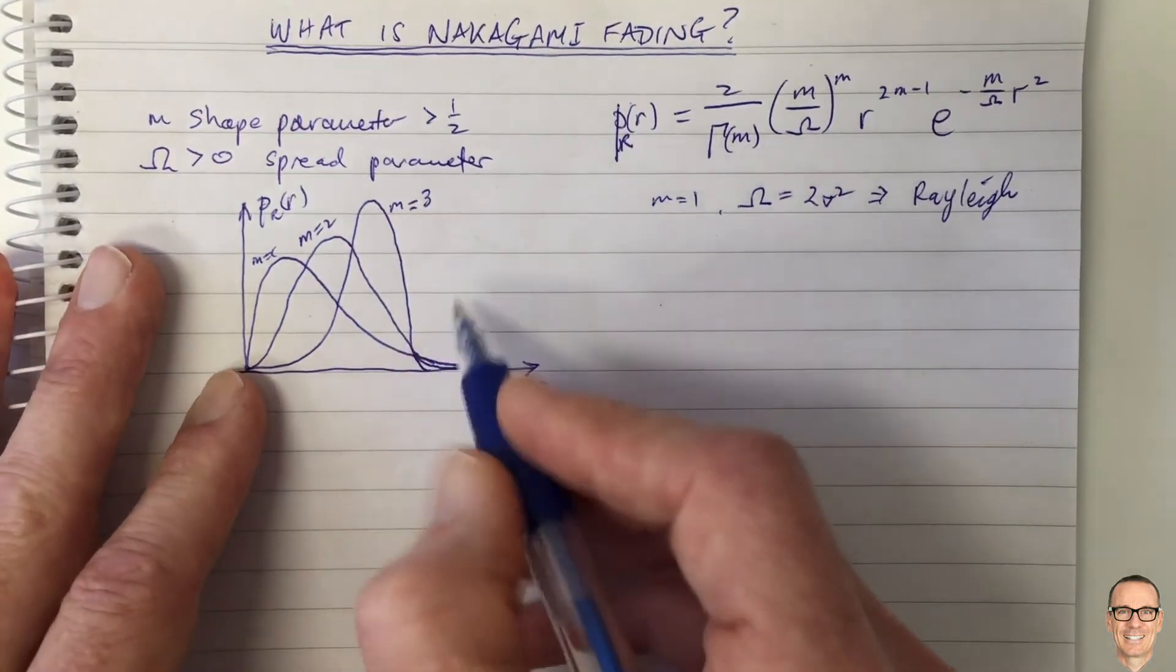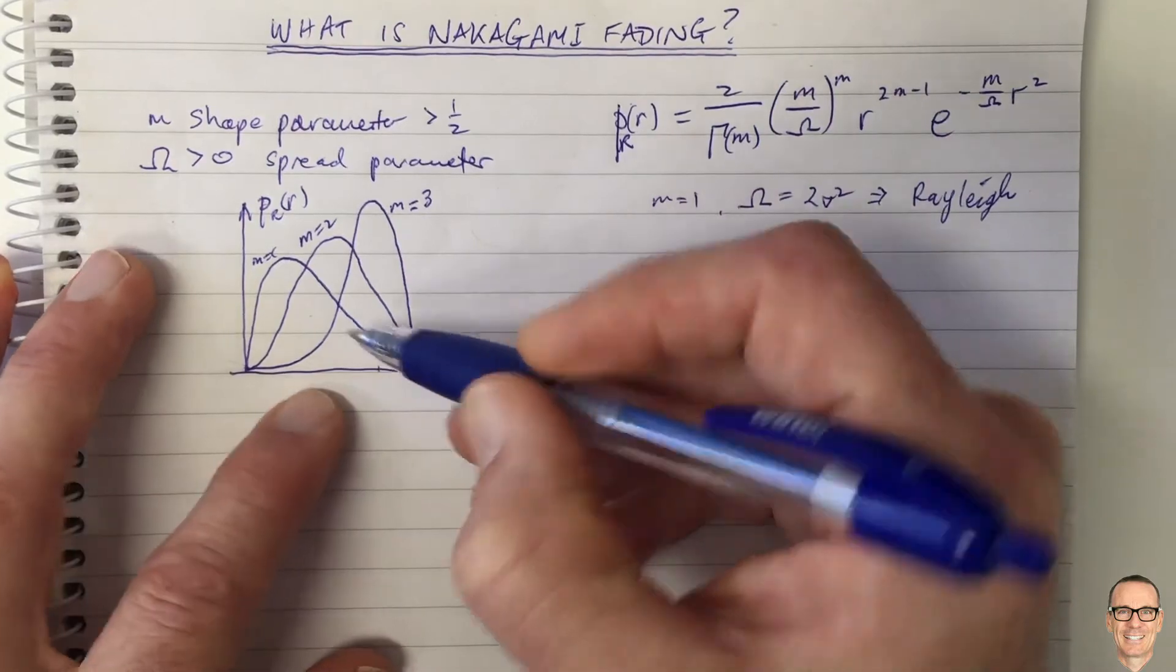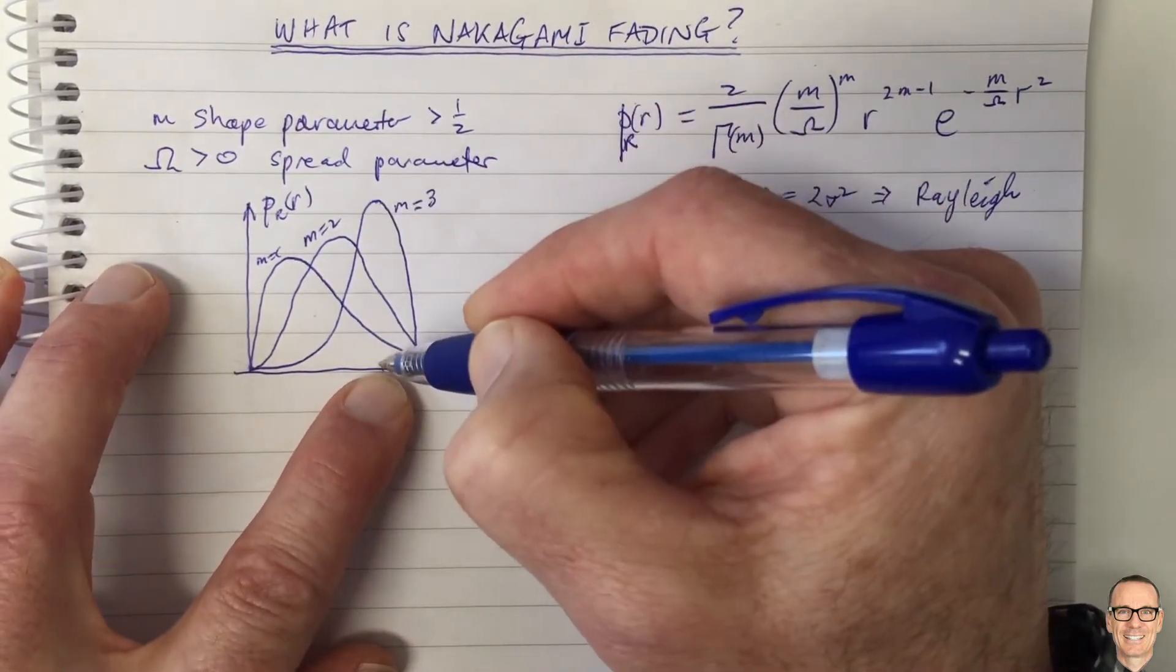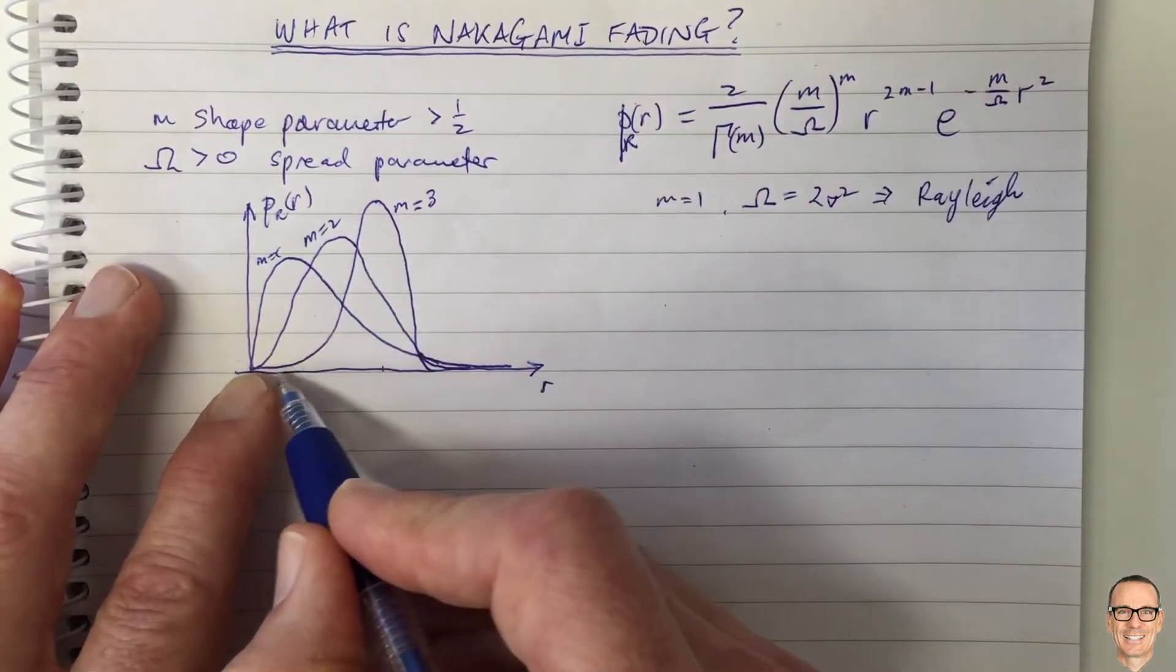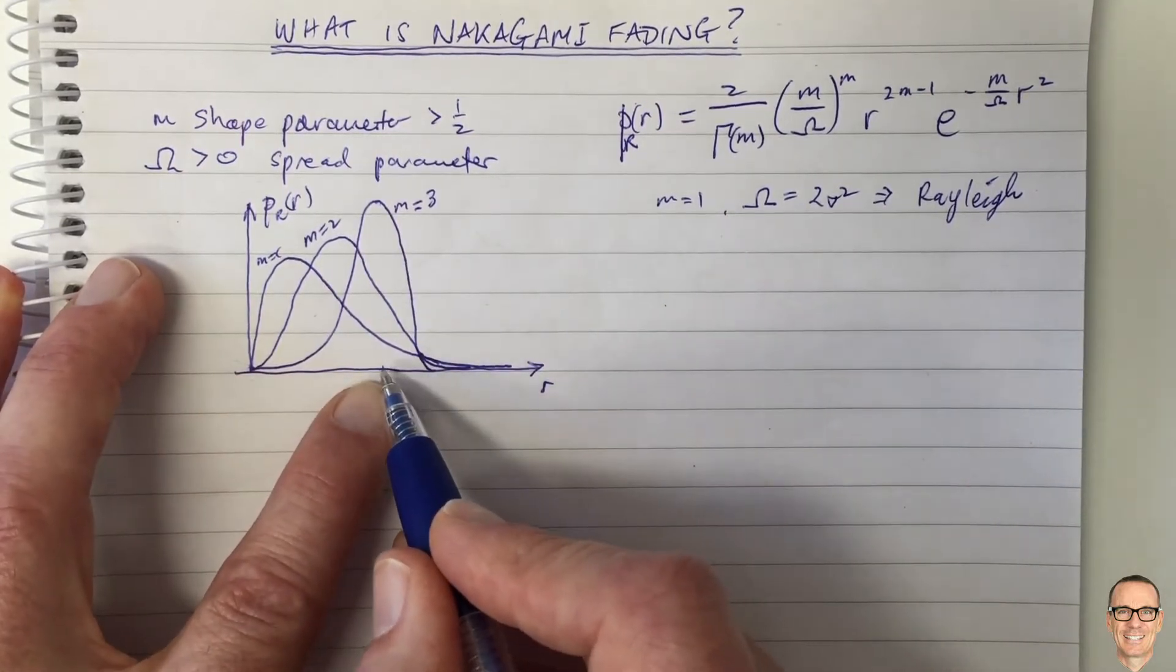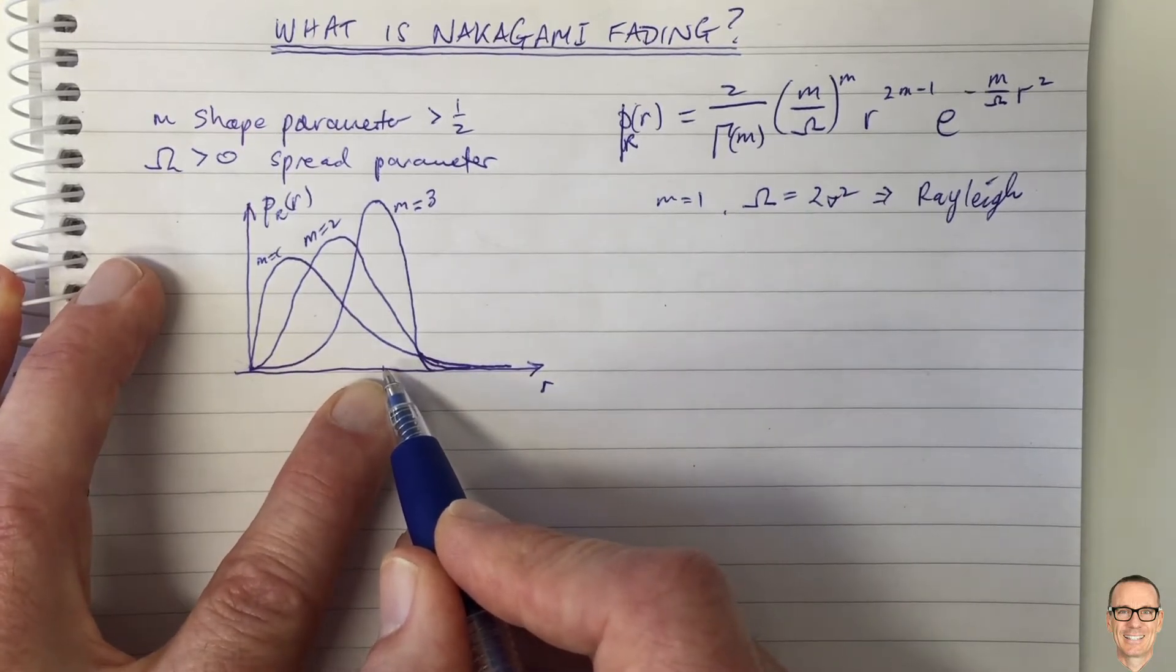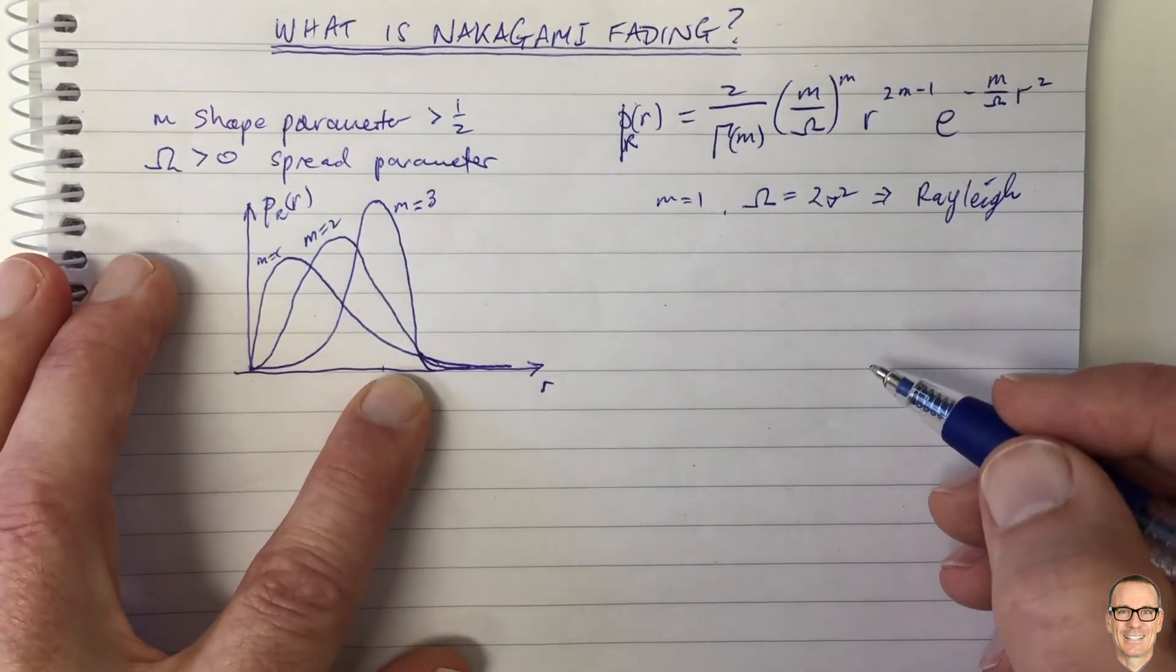So this is saying here for M equals 3, there's more chance of getting a signal with an amplitude of this value here than there is of getting a signal with a smaller amplitude. But there's not much chance of getting very small, and so this is going to model well scenarios where there's a direct line of sight or maybe a number of main dominating paths plus other paths, just as it was in the Ricean case.